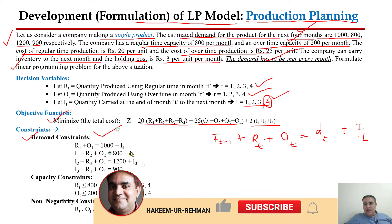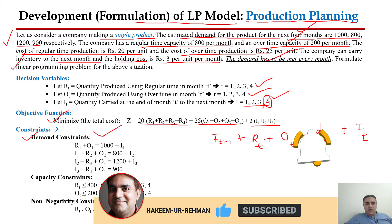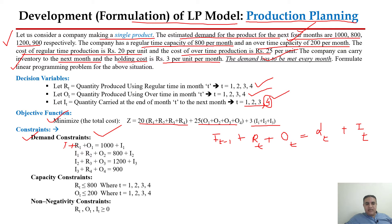Since the initial inventory is zero, for month one: regular time production quantity plus overtime production quantity equals demand of month one (1000) plus i1. For month two: i1 plus regular time production quantity in month two plus overtime production quantity in month two equals demand of month two plus i2. Similarly, this pattern continues for month three and month four. i_{four} represents how much inventory we should have at the end of month four.